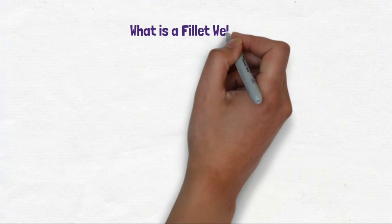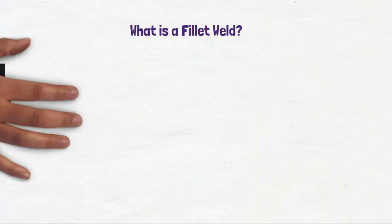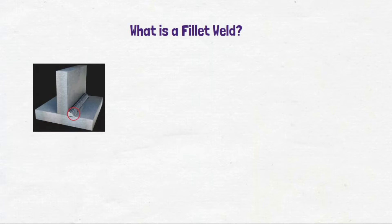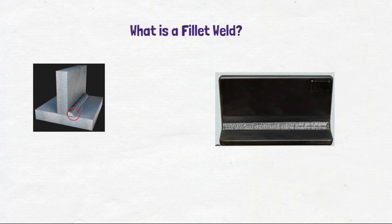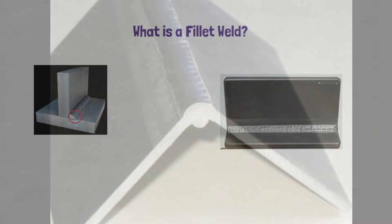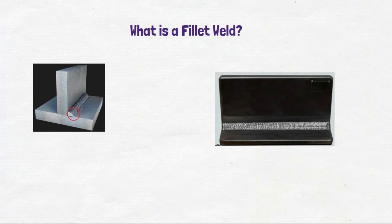What is a fillet weld? A fillet weld is a basic type of weld for joining two or three members using a T-joint, lap joint, or corner joint configuration.